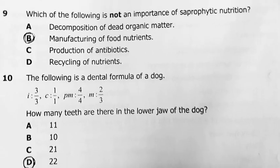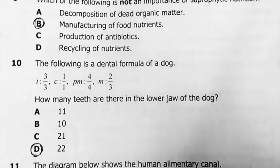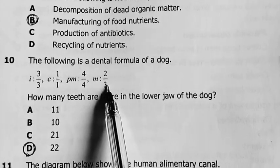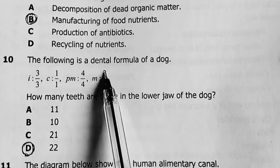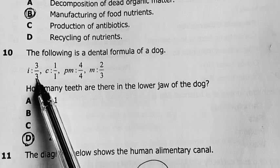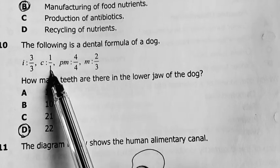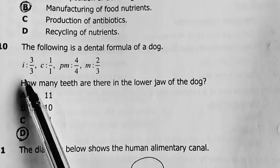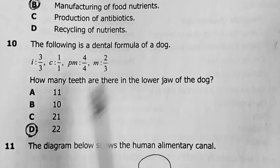Number 10, the following is the dental formula of a dog. How many teeth are there in the lower jaw of the dog? The denominators represent the teeth in the lower jaw, half the number of teeth in the lower jaw. The numerators represent half the number of teeth in the upper jaw. So if this is a 3, it means this is half the number of teeth in the lower jaw. It means the total number of incisors are 6. Here, total number of canines are 2. Total numbers of premolars is 8. Then this one is 6. So if you add, this is 6 plus 2 plus 8 plus 6 gives me 22. The answer there is D.